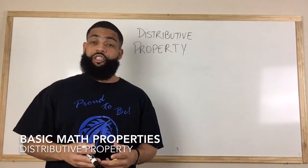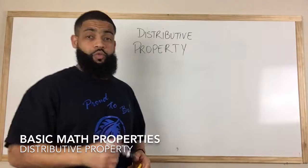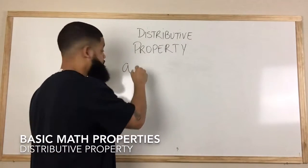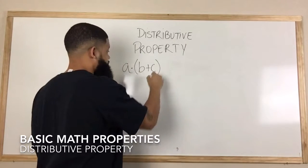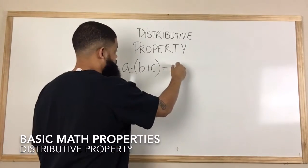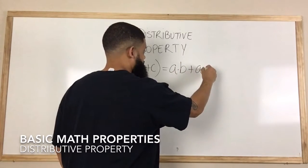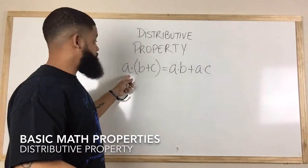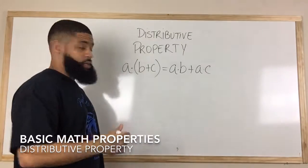It's either going to be multiplication and addition, or multiplication and subtraction. The rule tells us a times the quantity b plus c equals a times b plus a times c. We're distributing the number that's on the outside of the parentheses to the two numbers that are inside the parentheses.